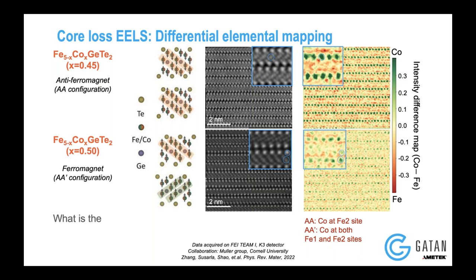We couldn't have done this if we had so much noise in our spectrum images, because cobalt and iron are very close to one another in energy. There are several challenges like background subtraction, and you need to make sure you have less noise in your spectra. We were lucky that because of the K3, we could easily separate out the noise and see the cobalt and iron spectra very clearly.